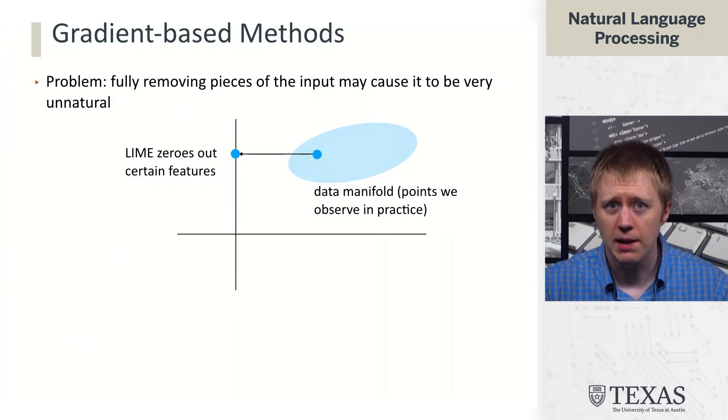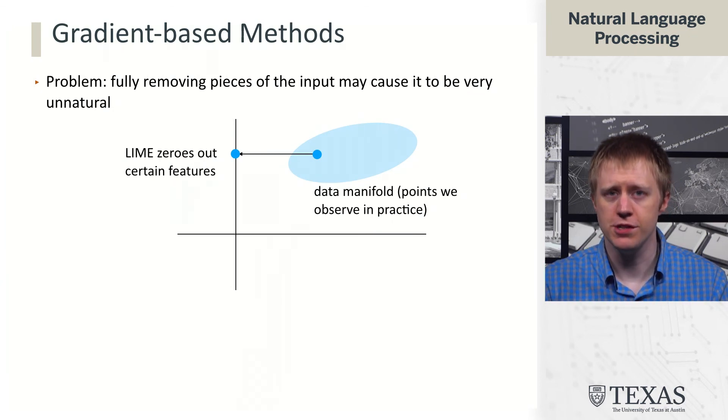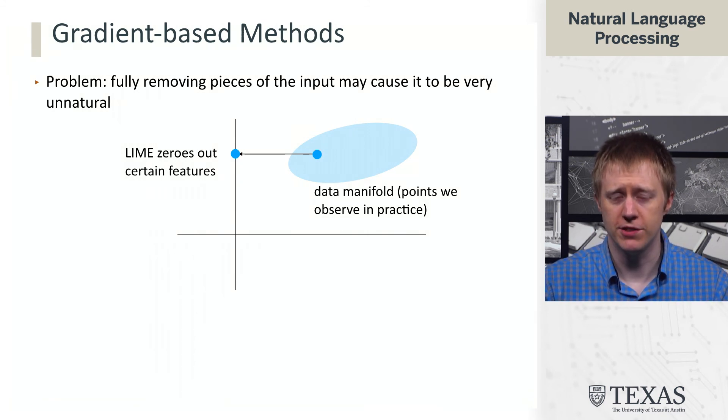So Lime is great, but there are some issues with applying it to a wide range of problems. And one of those issues is that when you zero out features, you're changing the input in a fairly dramatic way. And so for tasks like sentiment analysis, where we often think about models as kind of additive, it's like you have two sentences with positive sentiment and one with negative.